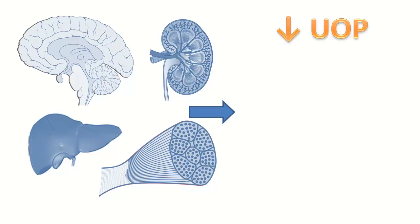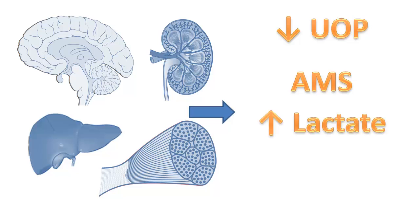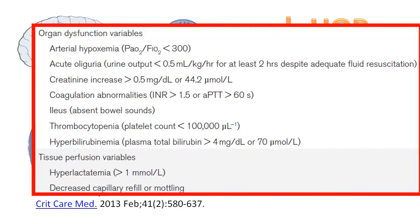When the body's important organs are poorly perfused, there are certain physical and biochemical signs. Impaired kidney perfusion leads to decreased urine output. Impaired brain perfusion leads to altered mental status. Muscle and liver ischemia can cause increased levels of lactic acid in the body. The surviving sepsis guidelines define several criteria for the severity of organ impairment, including absent bowel sounds and thrombocytopenia or other signs of peripheral organ impairment.